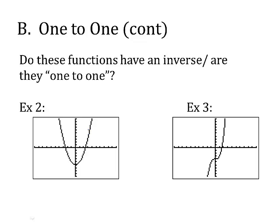Look at these: do these functions have an inverse, or are they one-to-one? Those are interchangeable. For the horizontal line test: if it hits two places, this one is not one-to-one. Look at this cubic — if I put a horizontal line through it, it only hits in one place. So will it have an inverse function? Sure will.